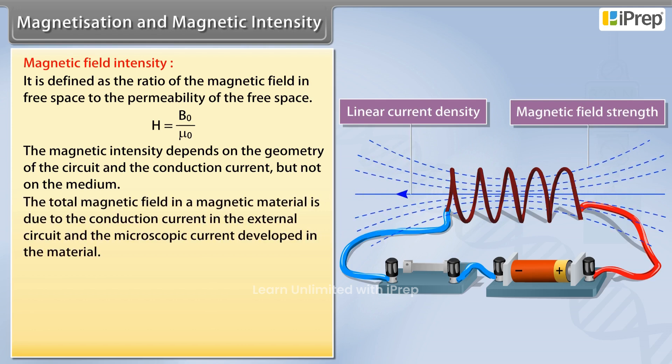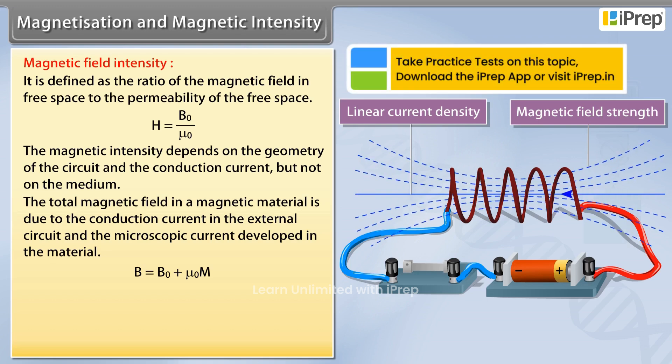The total magnetic field in a magnetic material is due to the conduction current in the external circuit and the microscopic current developed in the material. B is equal to B₀ plus μ₀M. It can also be written as B equals μ₀ multiplied by H plus M.